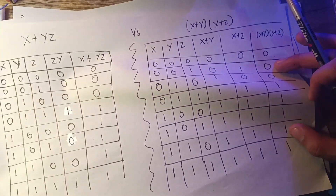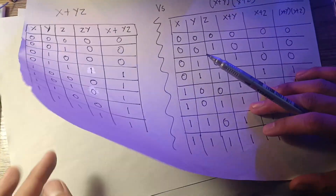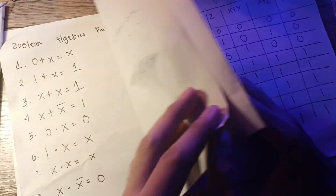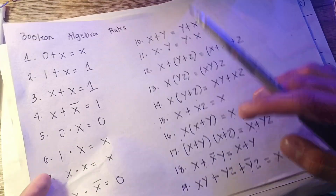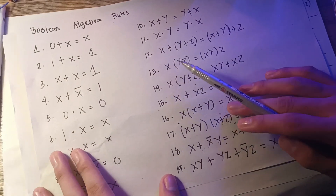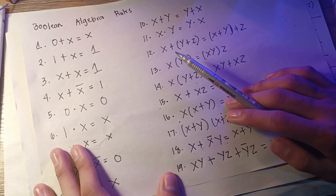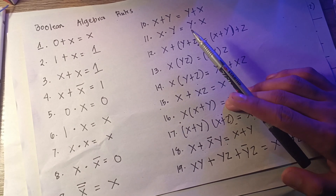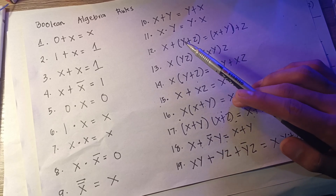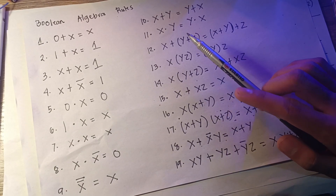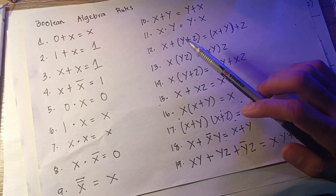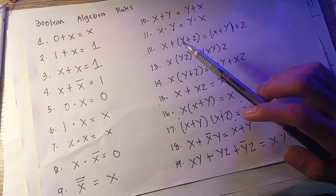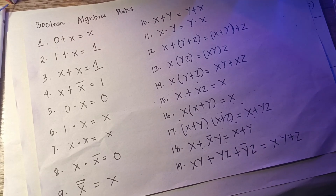The rules of Boolean algebra are very helpful for us in designing decoders or any circuit, because these rules can help us simplify our circuit. Simplifying our Boolean expression means our circuits get simpler and we don't need to buy more ICs — integrated circuits — because the expression is simpler.